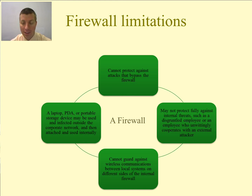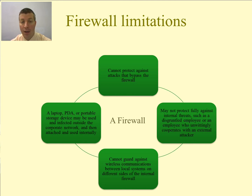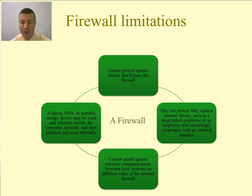A firewall also can't guard against wireless communication between local systems on different sides of the internal firewall. If you have a device inside the firewall that can also communicate outside it — such as a smartphone communicating on a wireless LAN locally but also over the cellular network — that could be an issue. Additionally, a laptop, smartphone, or tablet may be used and infected outside the corporate network and then attached and used internally, bringing something already infected into the local network.